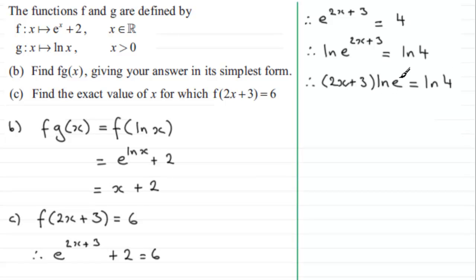Now the natural log of e is a well-known result. It is 1. If you've got any log of a number in its own base, it's always 1, and this is log in base e of e. So 1. 1 times 2x plus 3 just gives us 2x plus 3. So 2x plus 3 equals the natural log of 4.